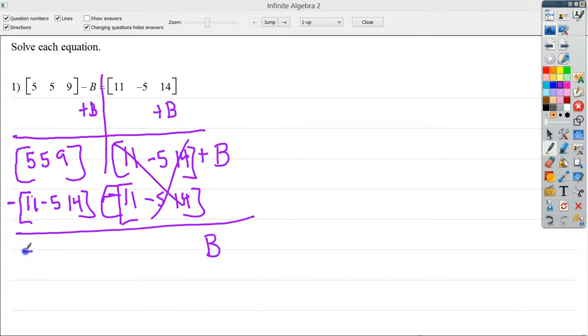I do 5 minus 11. I get negative 6. I do 5 minus negative 5, which is, of course, 5 plus 5, or 10. And then I do negative 9 minus, not negative, 9 minus 14. And I end up with negative 5. So this is my result.